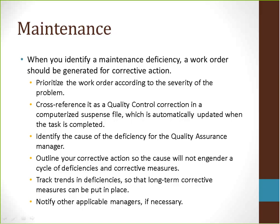When you identify a maintenance deficiency, generate a work order for corrective action. Prioritize the work order according to the severity of the problem. Cross-reference it as a quality control correction in a computerized suspense file, which is automatically updated when the task is completed. Identify the cause of the deficiency for the quality assurance manager, and outline your corrective actions so the cause will not engender a cycle of deficiencies. Track trends in deficiencies so that long-term corrective measures can be put in place, and notify other applicable managers if necessary.